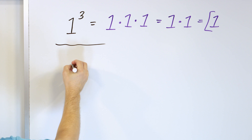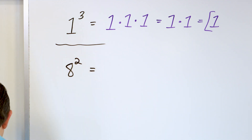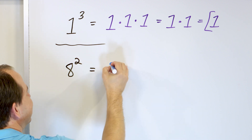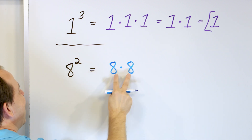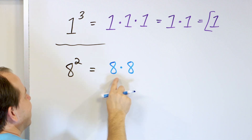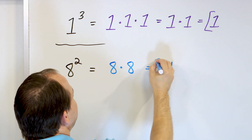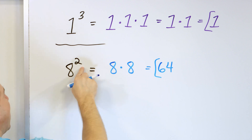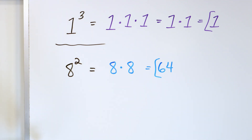What about 8 to the power of 2? We take the bottom number — the base — and we multiply it by itself. We have to have 2 on the board because we have a power of 2. 8 times 8 is 64. So we can say that 8 squared is 64, or 8 to the power of 2 is 64.